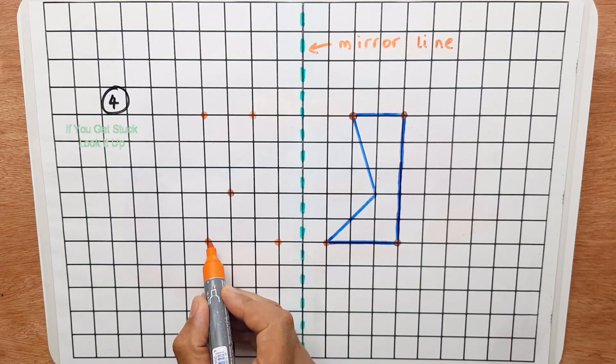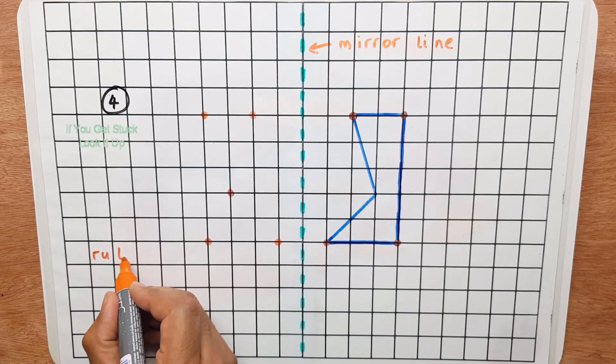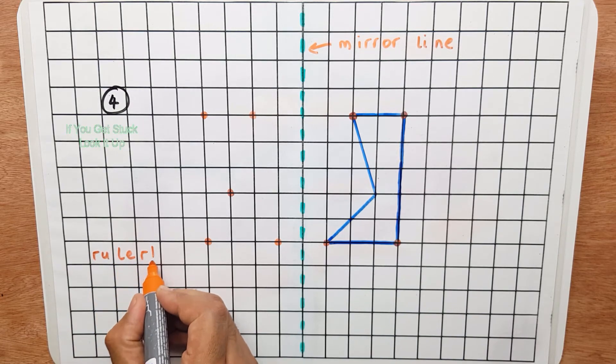Now I simply join all these up. But remember they told us to use a ruler.